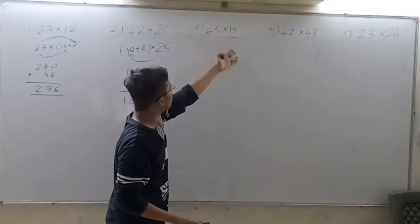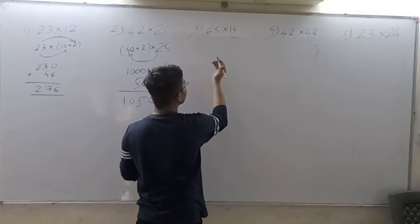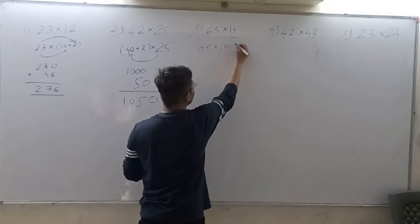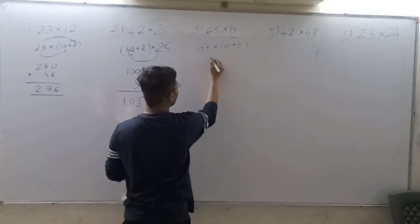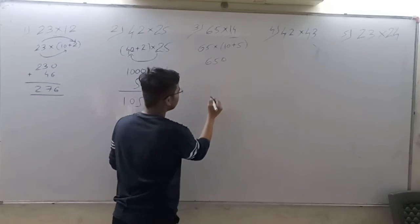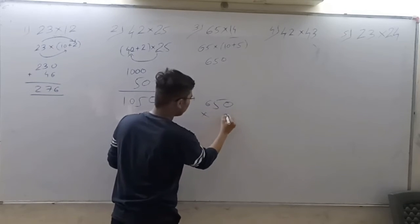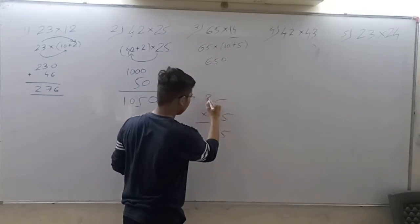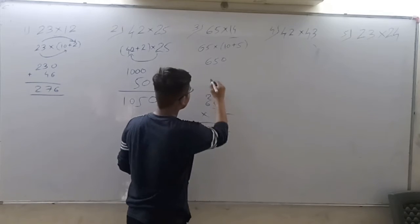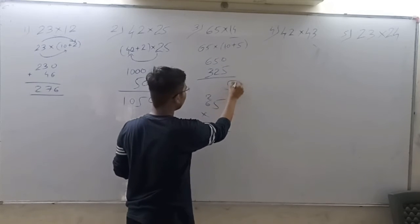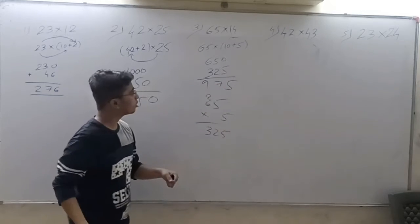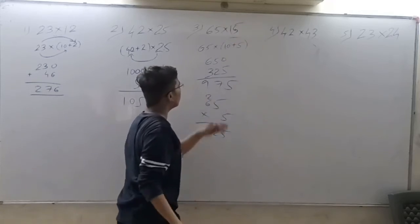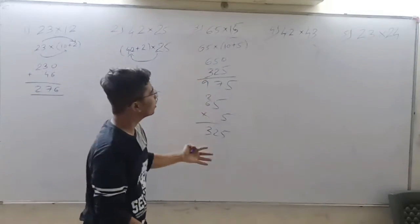This time small number is 40. If you have 60, then you will not get any problem, but 40 is easy. Here we are going to break as 10 plus 5. 65 times 10 equals 650, then 65 times 5. 65 cross 5 equals 325. So 650 plus 325 equals 975. This means 65 into 15. Next.